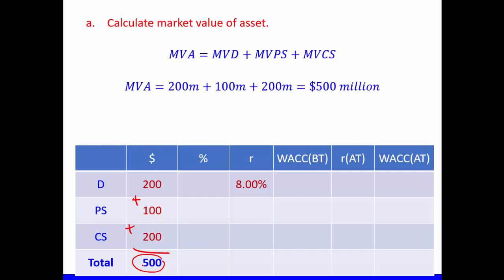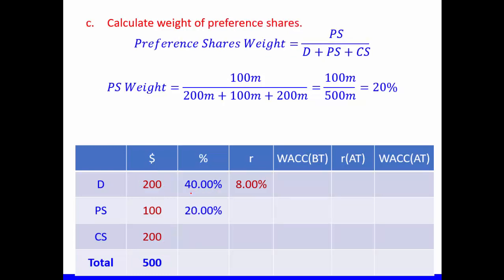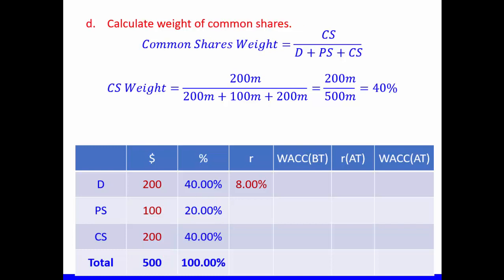This is our market value of assets, or enterprise value — since we don't have cash here, both are the same. The weight of debt is market value of debt divided by the total: 200 divided by 500 = 40%. The weight of preference shares is market value of preference shares divided by the total: 100 divided by 500 = 20%.